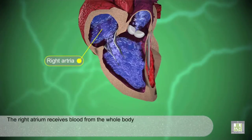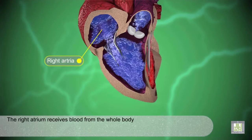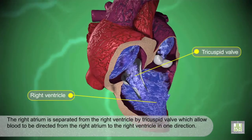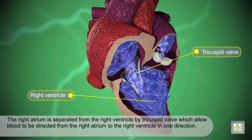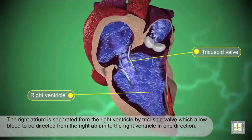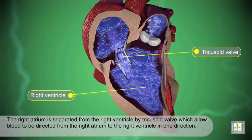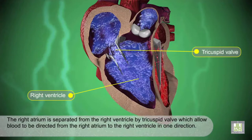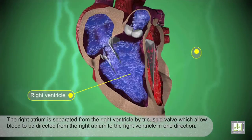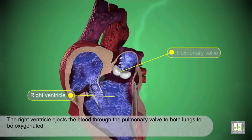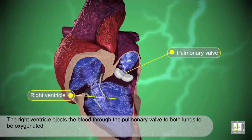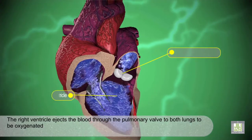The right atrium receives blood from the whole body. The right atrium is separated from the right ventricle by the tricuspid valve, which allows blood to be directed from the right atrium to the right ventricle in one direction. The right ventricle ejects blood through the pulmonary valve to both lungs to be oxygenated.